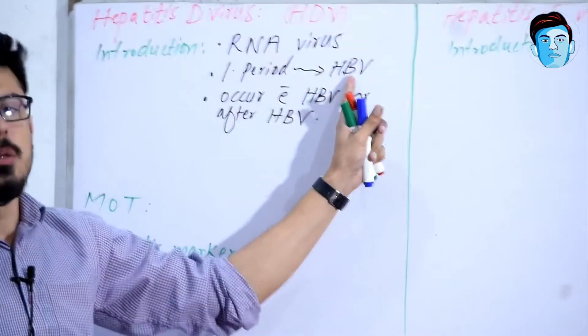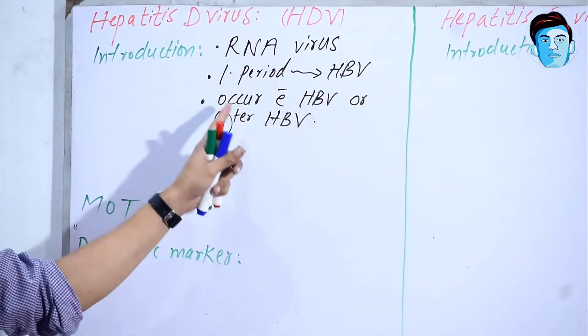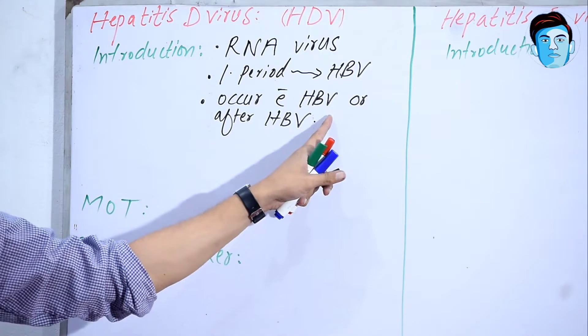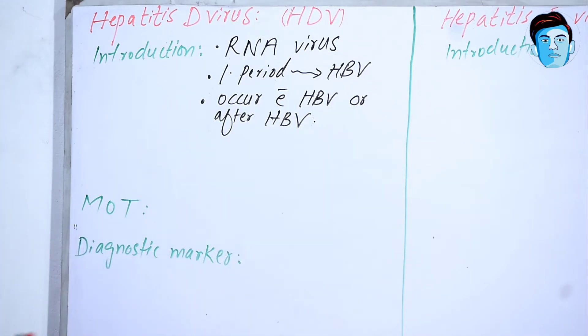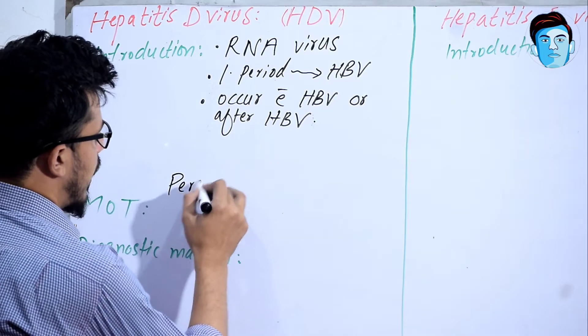Hepatitis D virus is an RNA virus with an incubation period similar to Hepatitis B virus. It occurs with Hepatitis B virus or occurs after Hepatitis B virus. This Hepatitis D virus is transmitted by parenteral route.